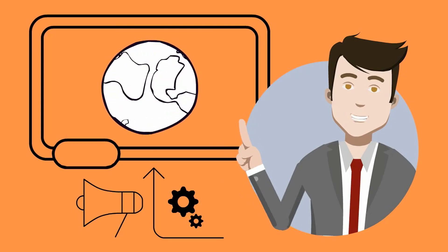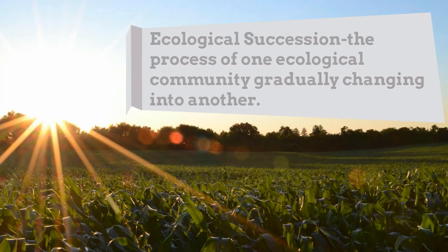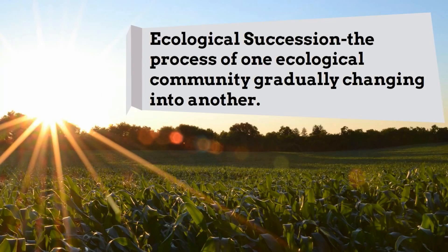Ecological succession is the process of one ecological community gradually changing into another. For example, if this farmland is not maintained over time it will change into something different, possibly a forest or maybe a field of flowers.